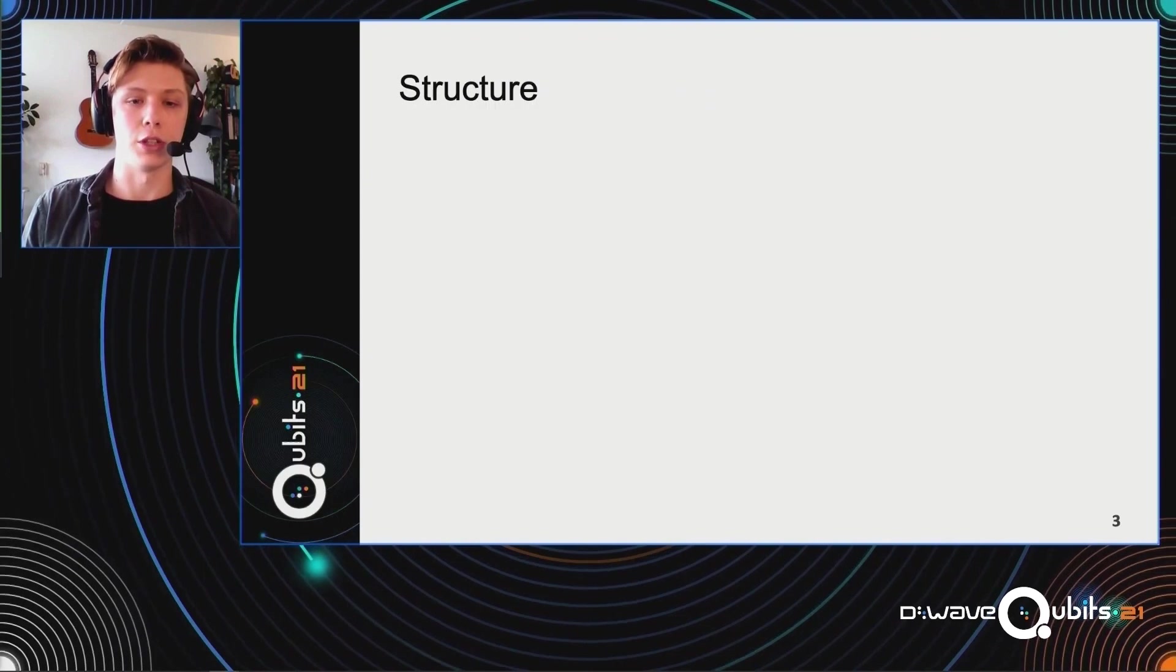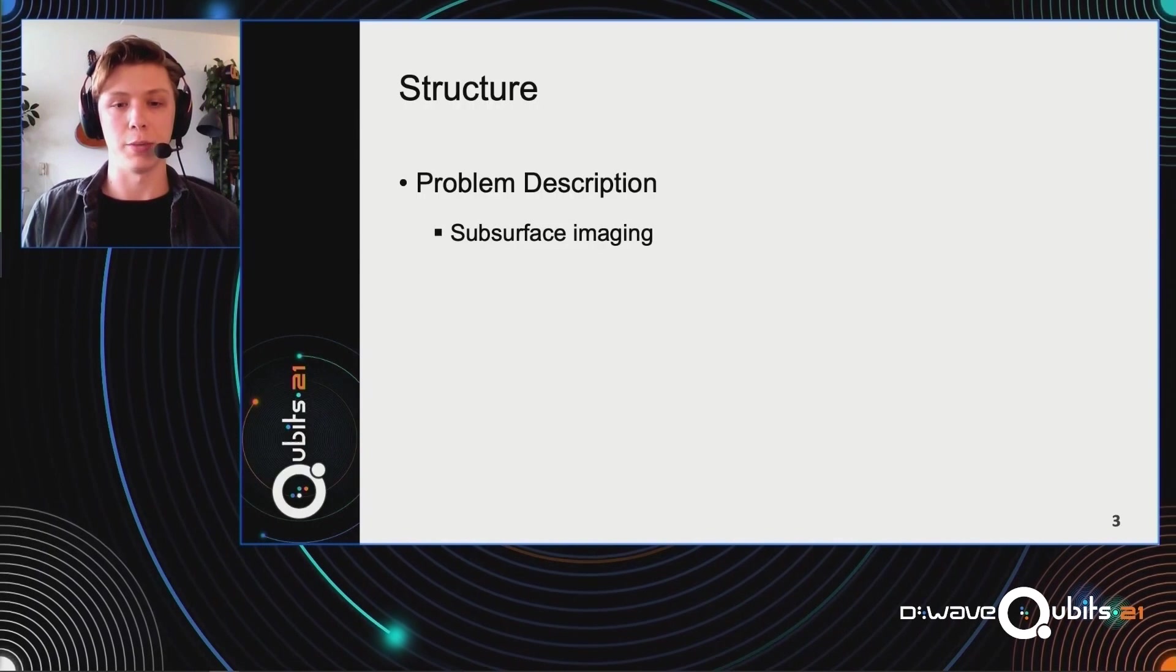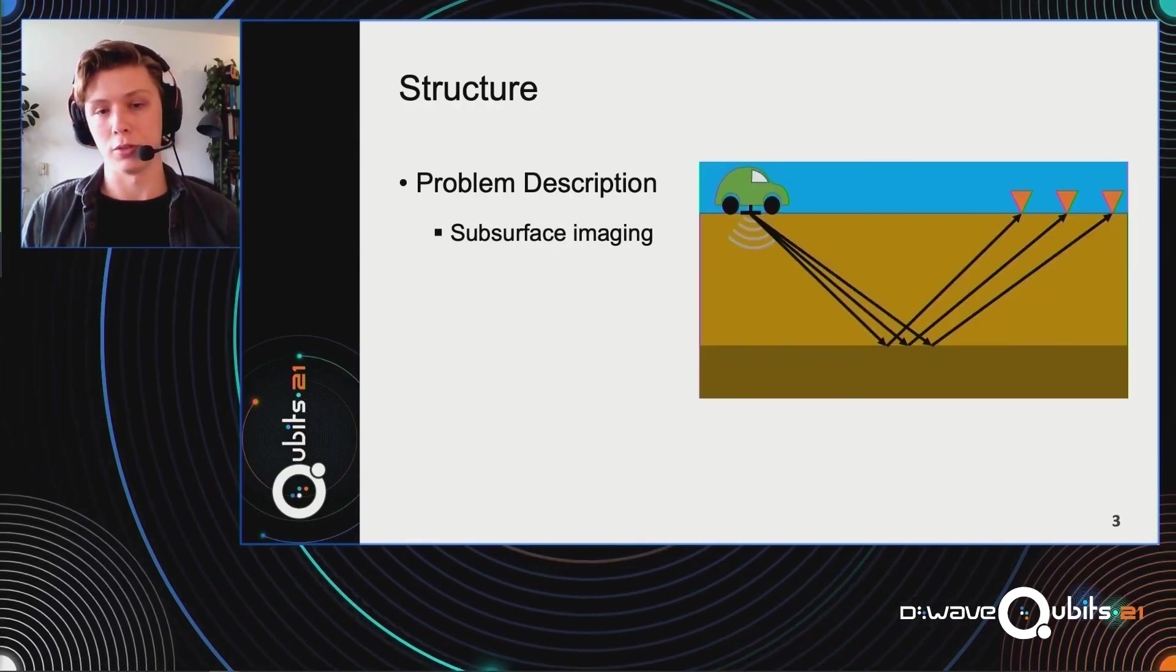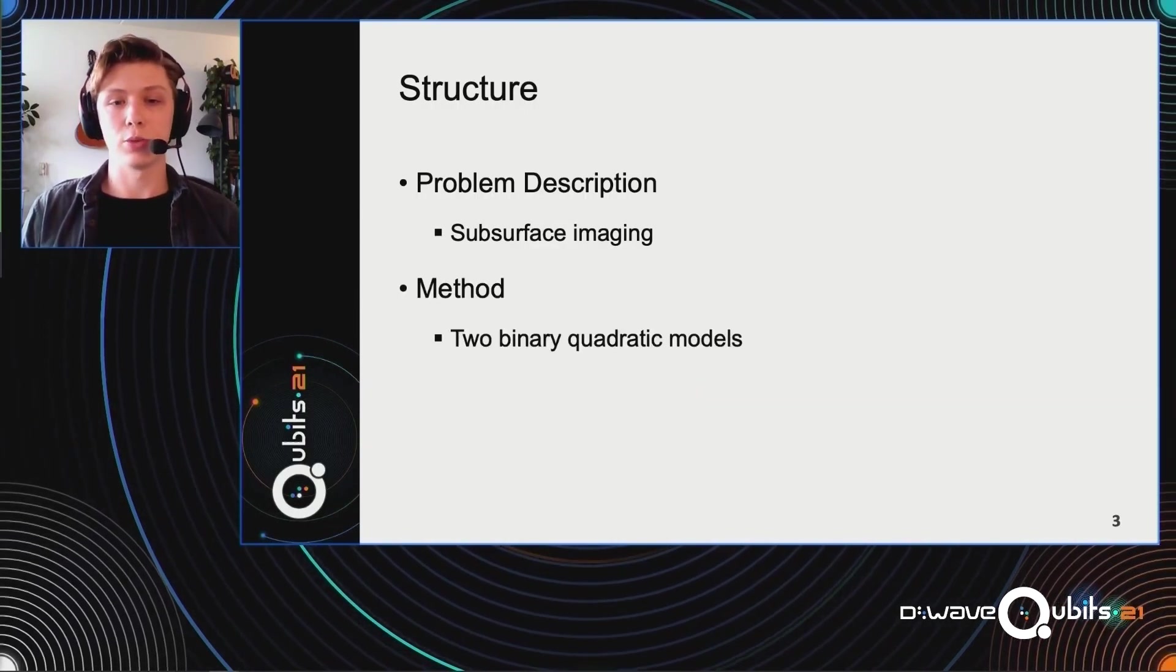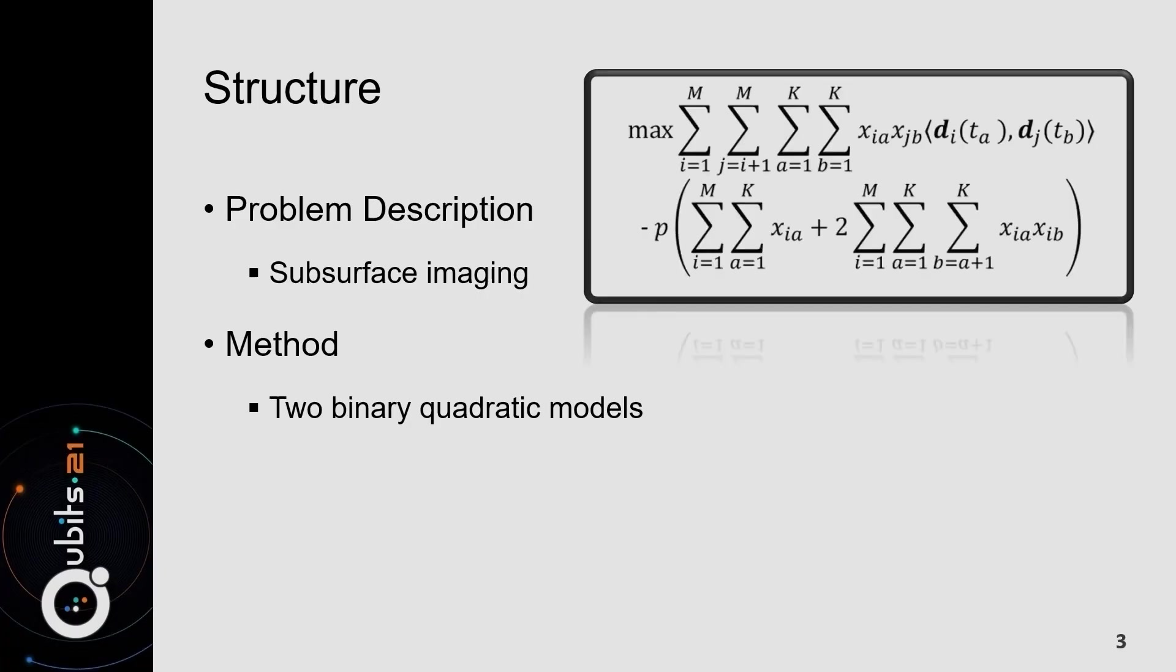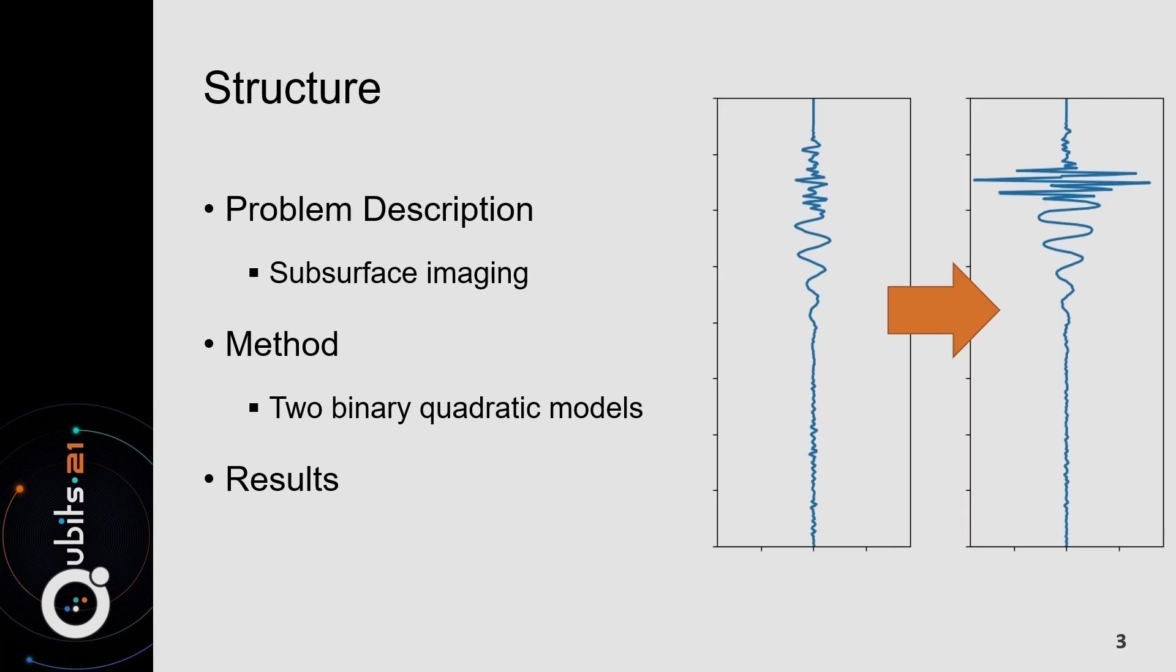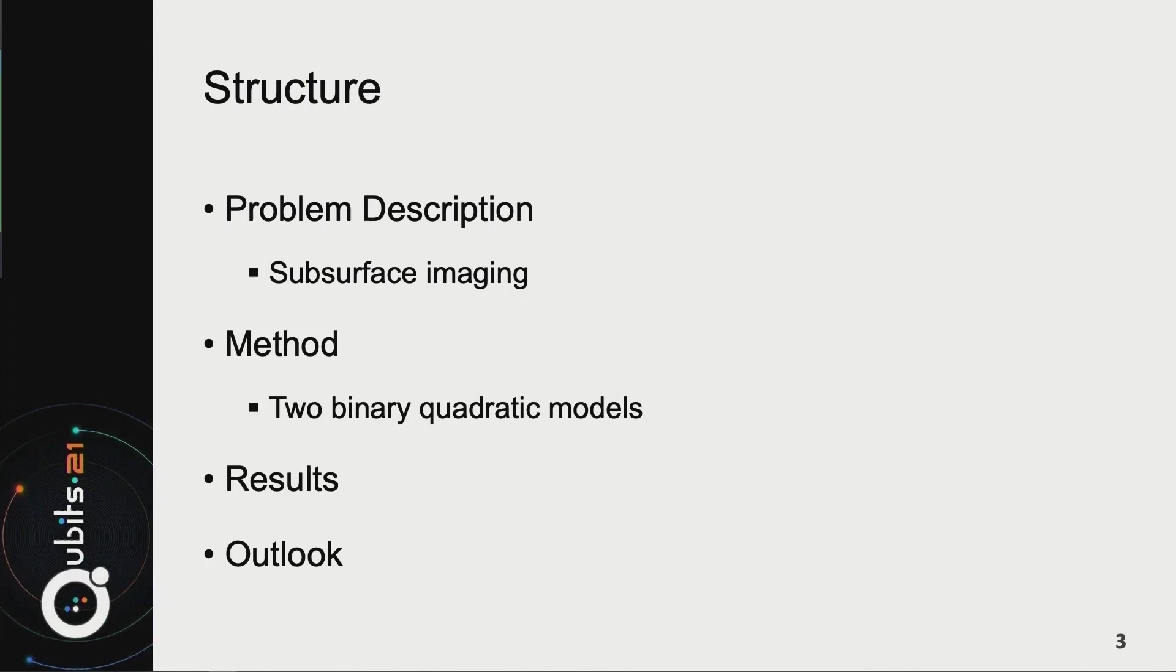So let's look what I've got in store for you today. First, I'm going to give you a crash course into subsurface imaging using a simplified model to explain subsurface imaging and some of the problems that arise. Next, we will go into the method where I will explain two binary quadratic models. Here, I will scare you with a little bit of mathematics. Then we will move on to the results and I will explain why it is so amazing that we go from the picture on the left to the picture on the right. Lastly, we'll go into the conclusion and outlook.